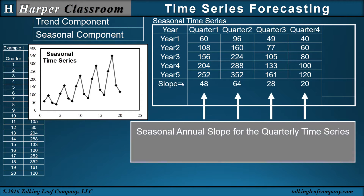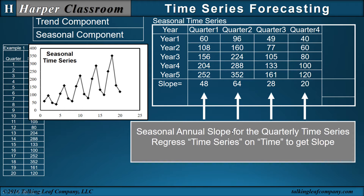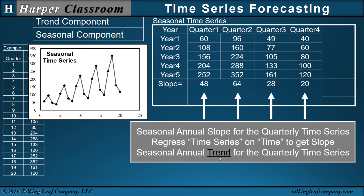Because of the trend component, I'll take the slope of every quarter throughout the years — that's the seasonal annual slope for the quarterly time series. For quarter one, the trend or slope from one year to the next is the annual slope. The way we calculate the annual slope is to regress the time series on time to get the slope, which is the same as the trend for the quarterly time series.